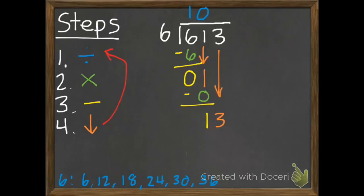We have 13. Since we brought down, start back at step 1. Divide. There are 2 6's in 13. So we put that 2 at the top. 2 times 6 is 12. 13 subtract 12 is 1. Nothing left to bring down. So we just have that remainder of 1.